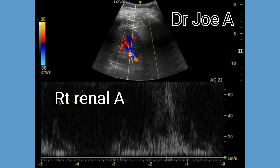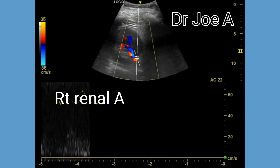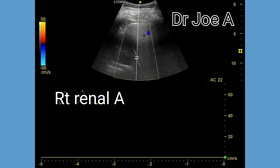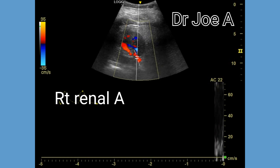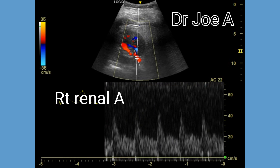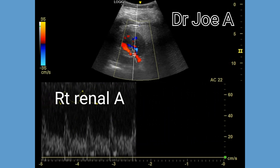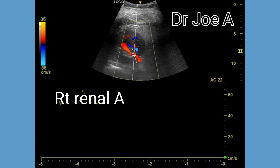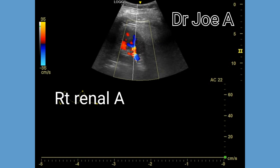The end diastolic velocity is less than 50 centimeters per second. The resistive index or RI is usually between 0.5 and 0.7. A high resistance waveform in the renal artery may indicate renal artery stenosis; however, in this case it is normal. The right renal artery shows a PSV or peak systolic velocity of 40 centimeters per second, which is normal. It is also good practice to measure the renal aortic ratio or RAR — in this patient it was normal.